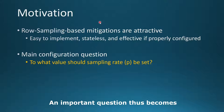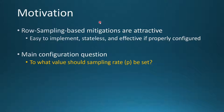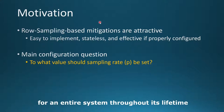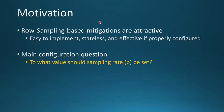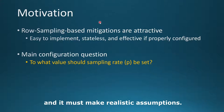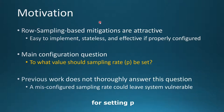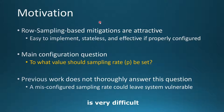An important question becomes: to what value should the sampling rate be set to provide an adequate level of defense? Answering this question must be done holistically for an entire system throughout its lifetime, rather than for a single bank or a single refresh window only, and it must make realistic assumptions. Unfortunately, previous work doesn't thoroughly answer this question, and the absence of a rigorously analyzed formula for setting P is dangerous. A misconfigured row sampling implementation could leave a system vulnerable, and catching this misconfiguration is very difficult.